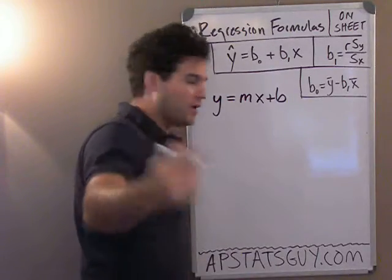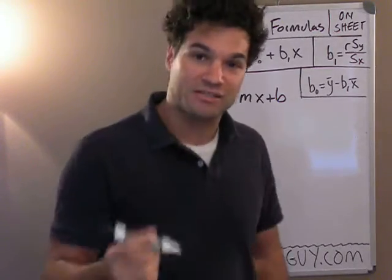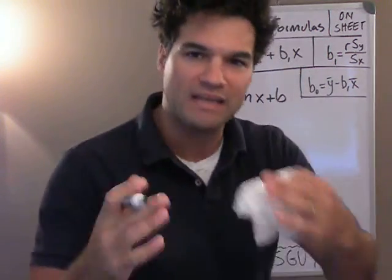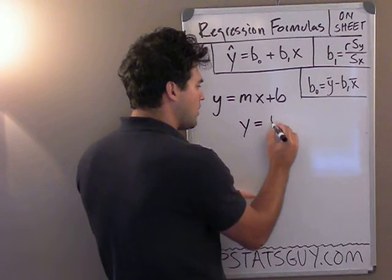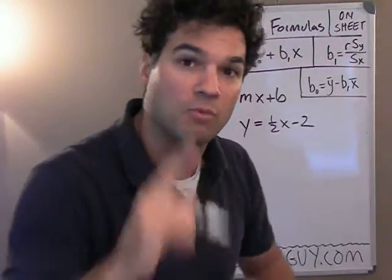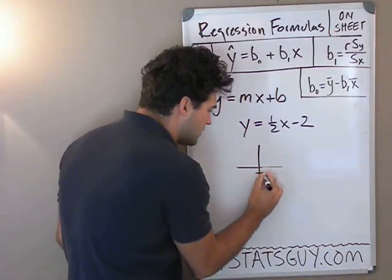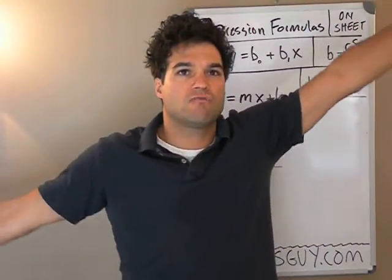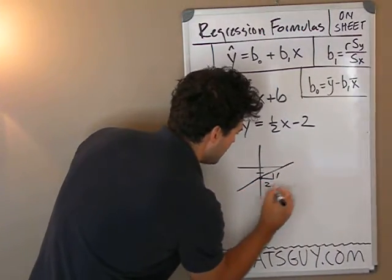You remember this formula from when you were younger: y equals slope times x plus intercept. But the interesting thing about this formula — if I gave you this problem, plot the line y equals one-half x minus two — you'd look at the Cartesian plane, go down to the y-intercept, put a dot there, then put in a slope of one-half: over two, up one. And there's your line.